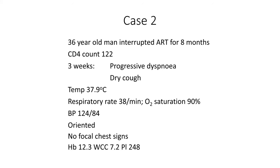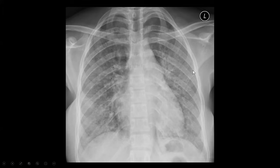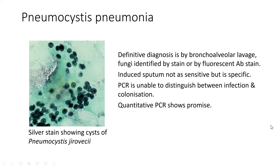The second case is a 36-year-old who had interrupted ART, with a CD4 count of 122. She had three weeks of progressive shortness of breath and a dry cough. Temperature 37.9, oxygen saturation down, tachypneic but oriented, normal haemoglobin, no focal chest signs, normal white cell count. The chest x-ray shows largely ground-glass opacification bilaterally with some pneumatoceles. This is obviously pneumocystis pneumonia.